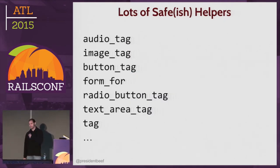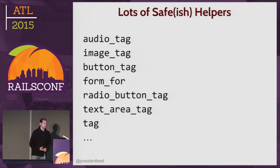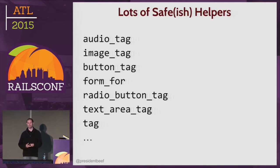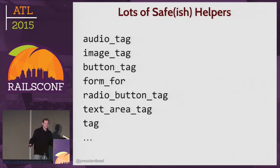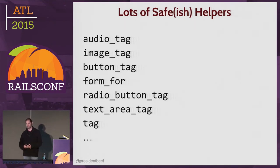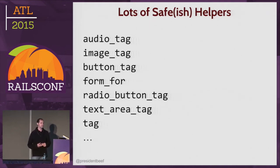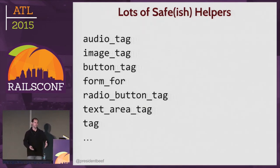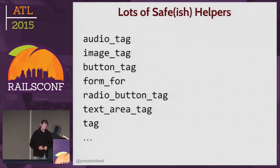Rails gives you a lot of pretty safe helper methods which you should use. You don't have to write a lot of HTML by hand. You can use these tags — they're safe-ish. Things like content_tag or other generic tags where you just drop in your own HTML are probably not very safe. Just be careful.